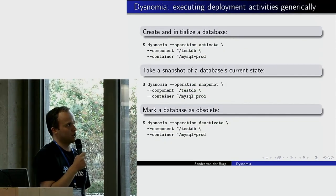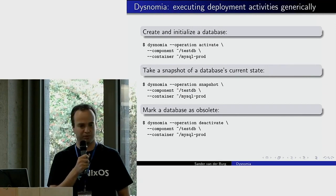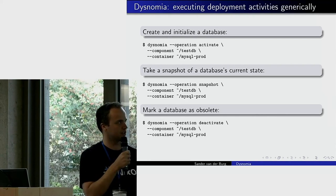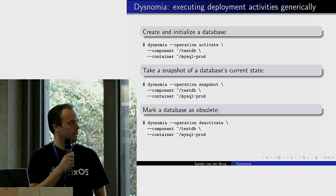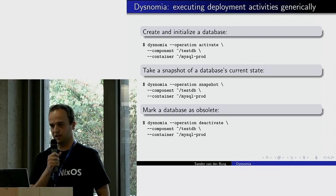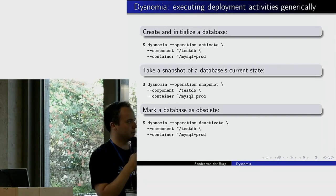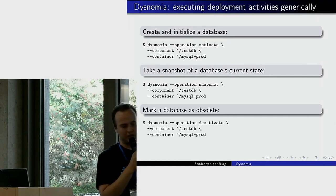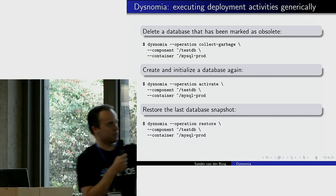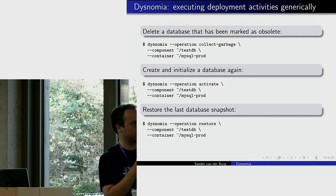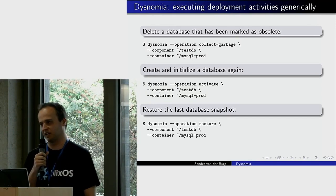On the command line, you invoke the dysnomia executable with three parameters: the operation to execute (like activate), the path to the initial state specification, and a path to the container configuration file. This lets you activate a database, take snapshots, mark it as obsolete, garbage collect it, reactivate it, and restore the previously taken backup — at which point your database is back including all its contents.